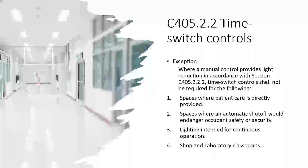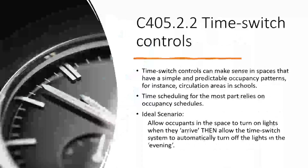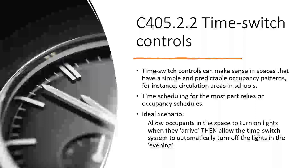Exceptions: where manual control provides light reduction in accordance with 405.2.2.2, controls shall not be required for spaces where patient care is directly provided — that involves informal logic and you'll have to prove it. Also excepted are spaces where automatic shutoff would endanger occupant safety or security, lighting intended for continuous operation, and shop and laboratory classrooms. Time switch controls make sense in spaces with simple, predictable occupancy patterns. For example, circulation areas in a school — we know when periods start and end. That's when people are moving throughout the building; during class it's very limited, and that's where overrides take place.